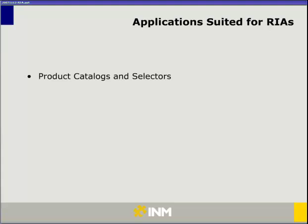Let's look at some of the applications that are really nicely suited for RIAs. The first one is product catalogues and selectors. We are going to see examples of each of these categories in the coming slides. One of the challenges that users typically face is when they arrive at a website looking for a product, it's very difficult to find and locate the right product. Product selectors are really great for this because you can sift through volumes of content quite nicely, see product catalog imagery, look at a product from different angles, and even see videos of those products.